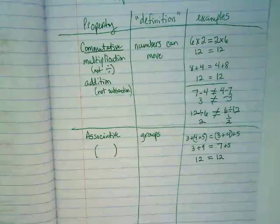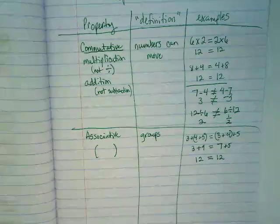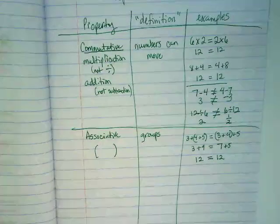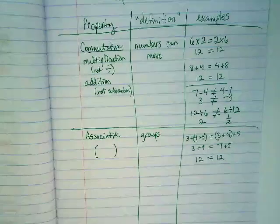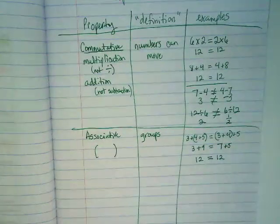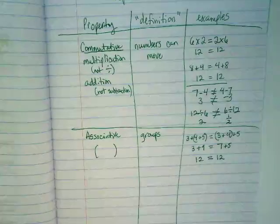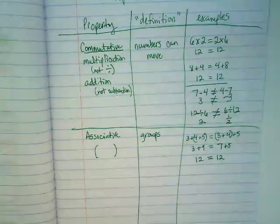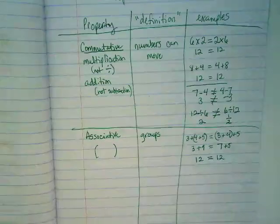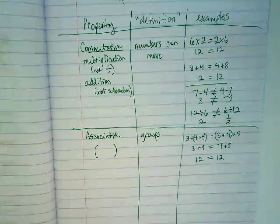This property is really helpful when we see something grouped that we're like, 'I don't want to add those.' So if I had something like 17+(3+8) and the 3+8 was grouped, I would rather have (17+3)+8 because I know that equals 20. You can change the grouping to make it numbers you like to work with better.